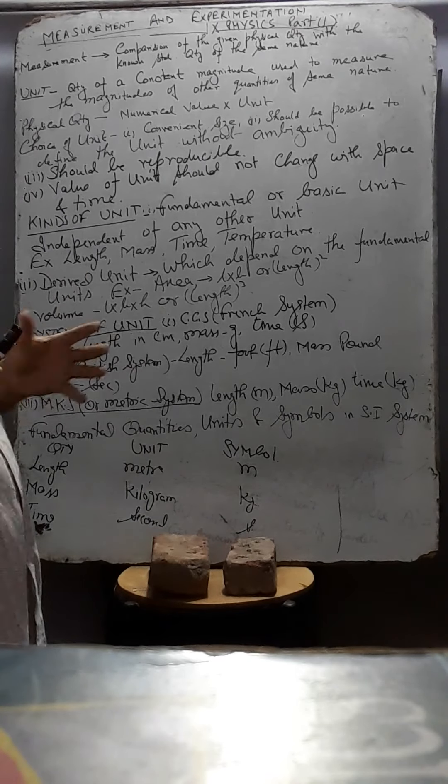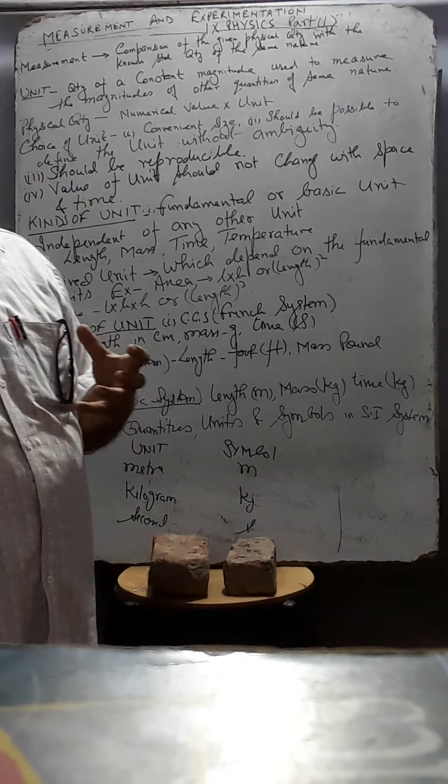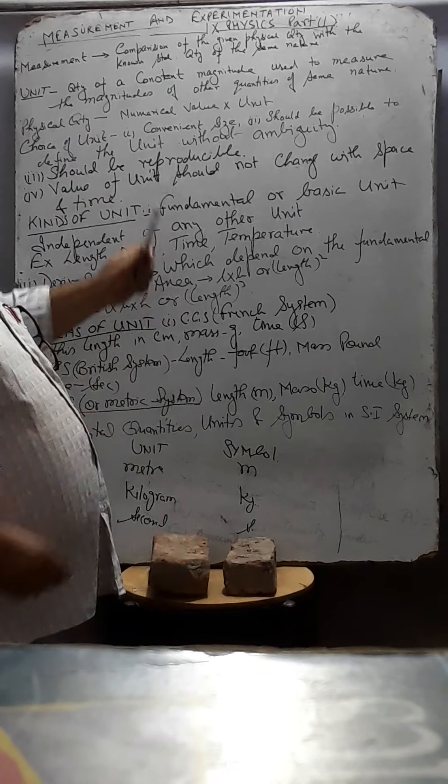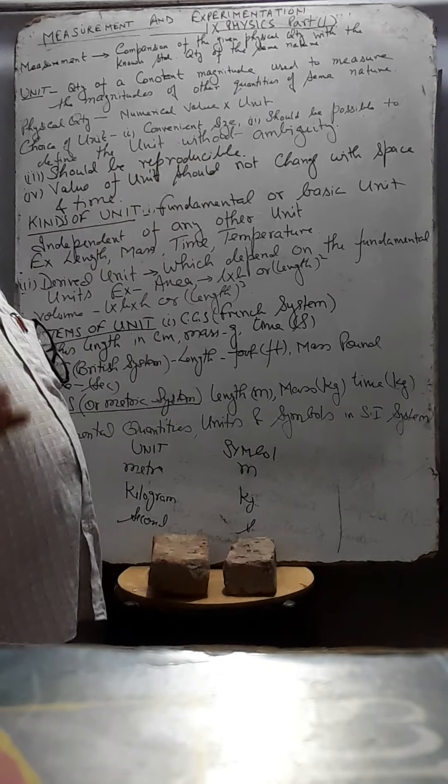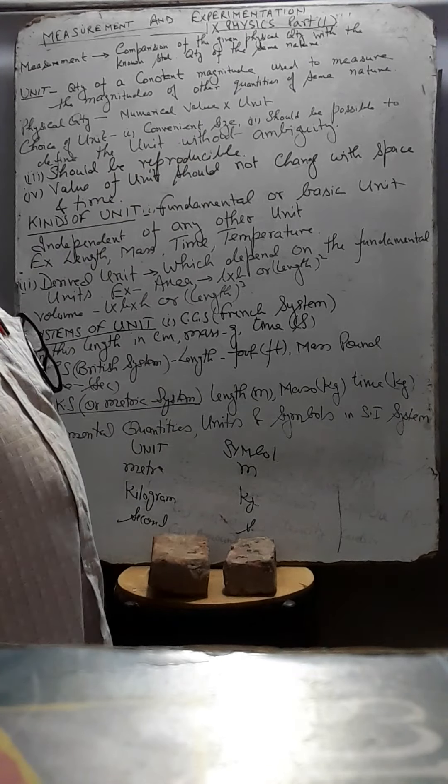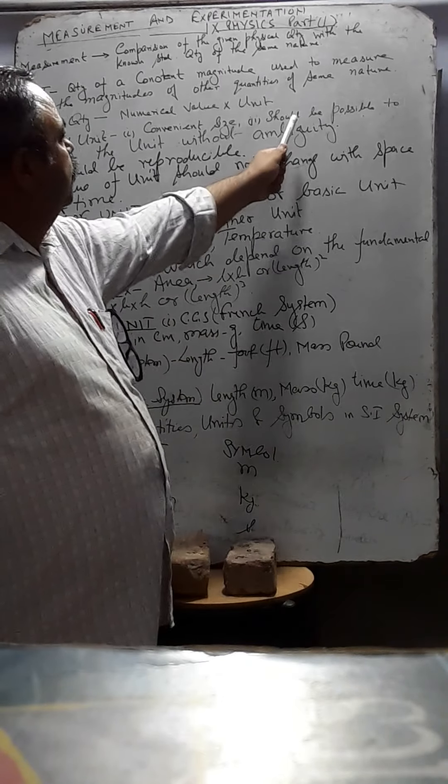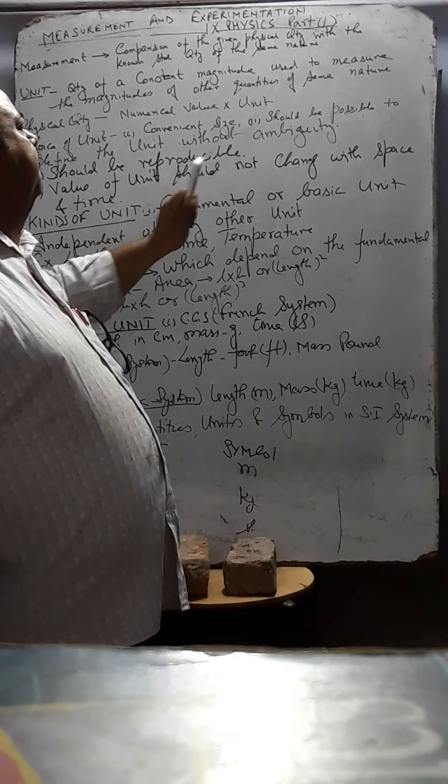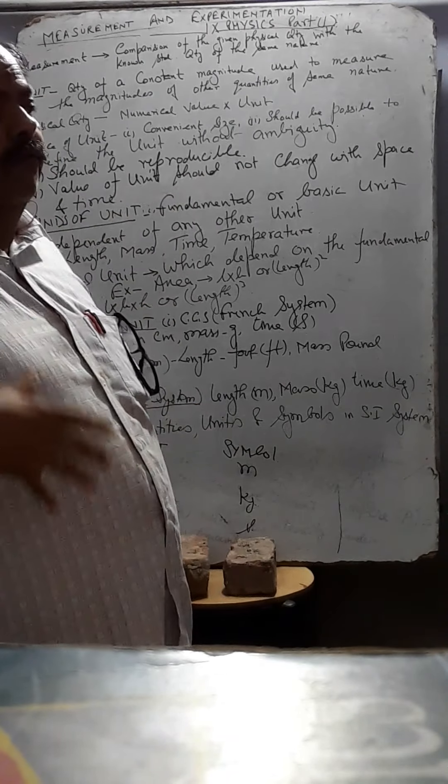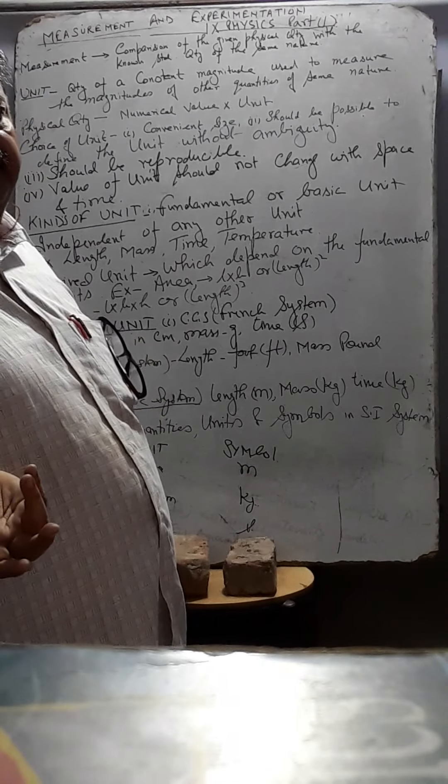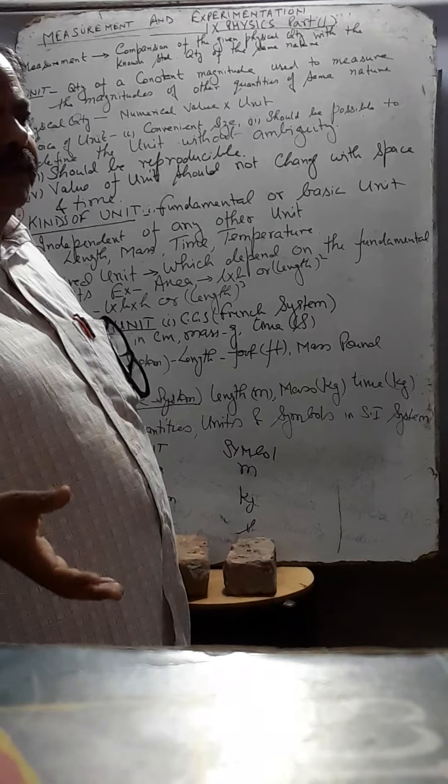Second thing, choice of the unit. What kind of unit should be chosen? Number one. Unit should be convenient in size. Easy to write. Convenient in size. Number two. Should be possible to define the unit without having it. It can be easily defined. For example, meter per second. How much distance is covered in one second.